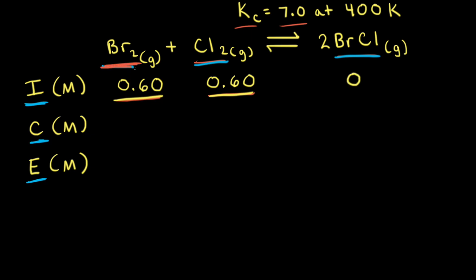Next, we think about Br2 reacting with Cl2 to form BrCl. Some of the bromine is going to react, but we don't know how much, so we're going to call that amount x. We're going to lose some of that bromine when we form our product, so we write minus x under bromine in our ICE table. In the balanced equation, it's a one-to-one mole ratio of bromine to chlorine. Therefore, if we're losing x for bromine, we're also going to lose x for chlorine, so I can write minus x under chlorine in the ICE table.